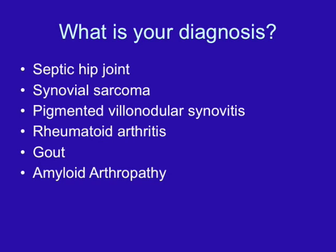Given the findings and clinical history, what do you suspect this patient has? Do you think he has a septic hip joint, possibly synovial sarcoma, pigmented villonodular synovitis, rheumatoid arthritis, gout, or perhaps amyloid arthropathy?